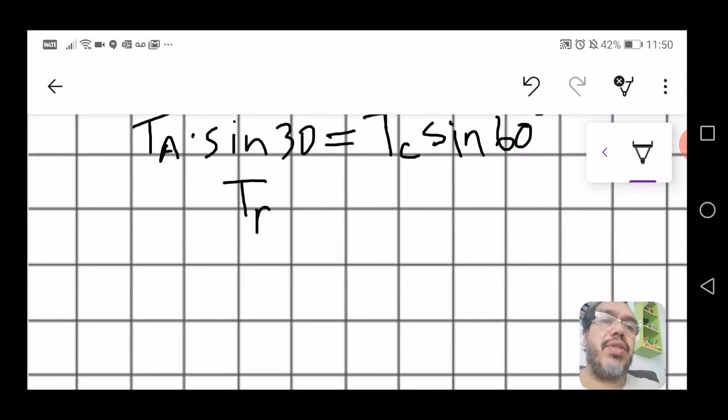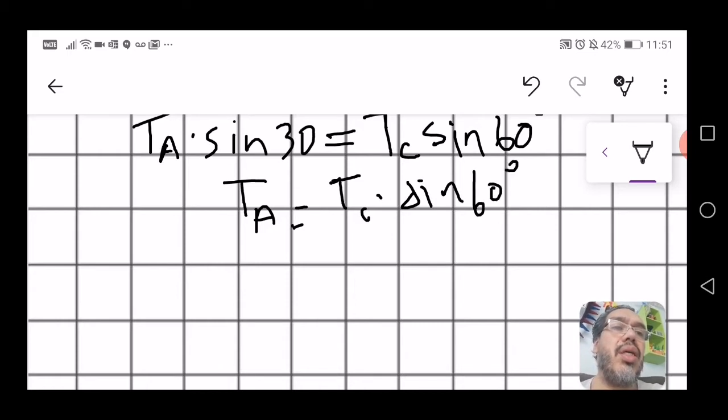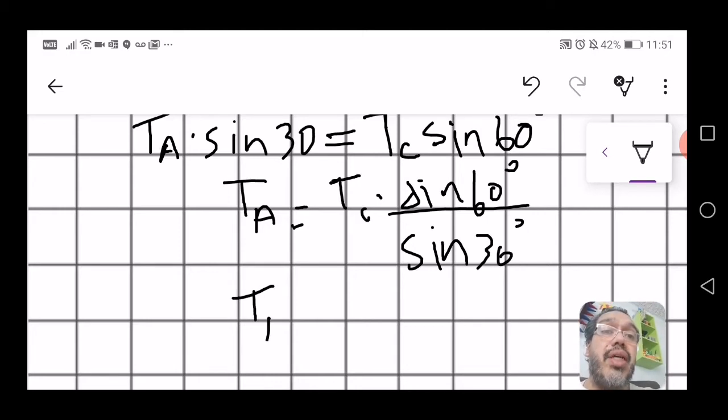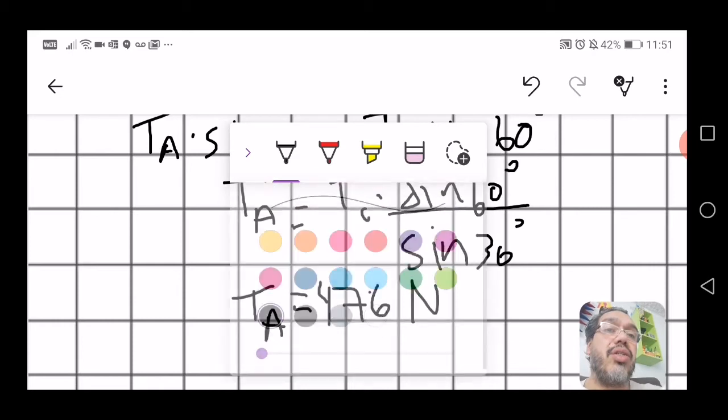A little bit of algebra. And T A is equal to T C, which we know from before, times sine of 60 divided by sine of 30. Now, if you use enough decimals in your calculator, this should give you something very, very close to 476 newtons. And so, that will be your answer for tension A.